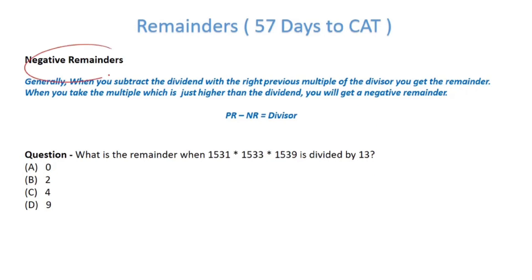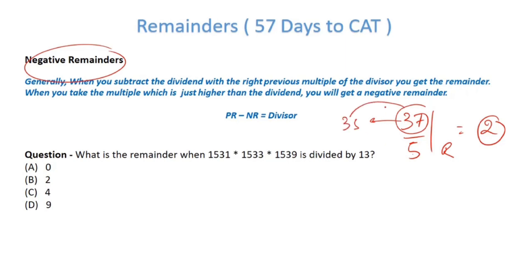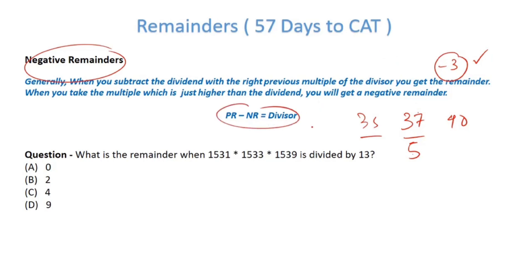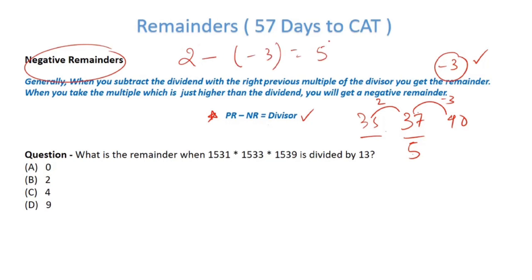Now let's look at negative remainders — an important concept. For 37 divided by 5, the remainder is generally 2: the multiple just less than 37 is 35, and 37 − 35 = 2. But if instead of the previous multiple you take the next multiple, which is 40, then 37 − 40 = −3. This is the concept of negative remainder. Remember: positive remainder minus negative remainder equals divisor. Here 2 − (−3) = 5, which is the divisor.